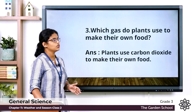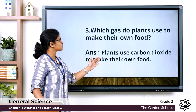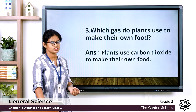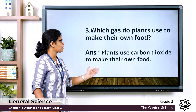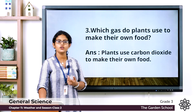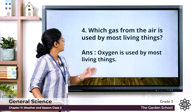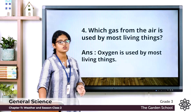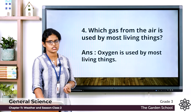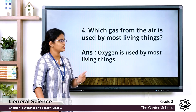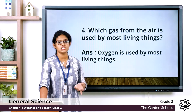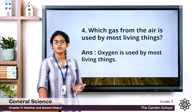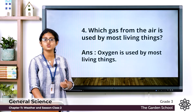Third: which gas do plants use to make their own food? Carbon dioxide — plants use carbon dioxide to make their own food. Fourth: which gas from the air is used by most living things? Oxygen — plants, animals, and human beings all need oxygen to live.